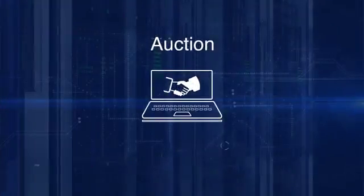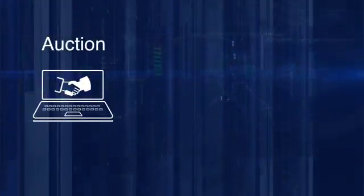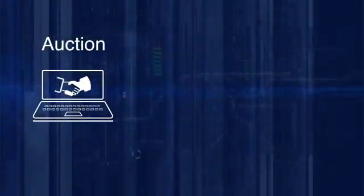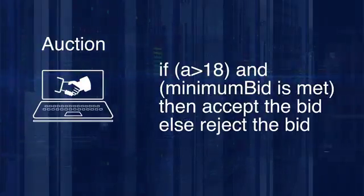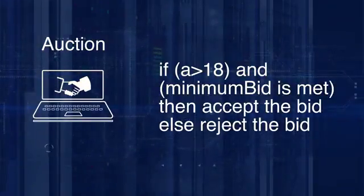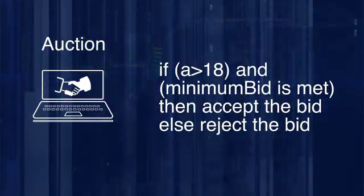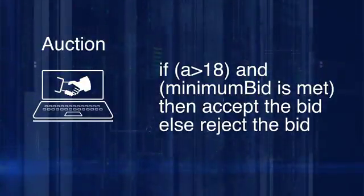Let's consider an example of what a smart contract can do. An auction bidding smart contract could execute this logic: if the age of a bidder is greater than 18 and the bid is greater than the minimum bid, then accept the bid — or else reject the bid. This can be done by a smart contract.